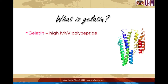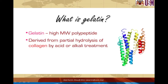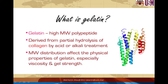Gelatin is actually a protein — a polymer of amino acids joined together by peptide bonds. It is a mixture of high molecular weight peptides produced by partial hydrolysis of a bigger and more complex protein, collagen, using acid or alkaline treatment. The chemical composition of gelatin is closely similar to that of its parent collagen. Gelatin molecules are quite large, with molecular weight ranging from a few thousand up to several hundred thousand daltons. This molecular weight distribution has a great impact on physical properties, particularly viscosity and gel strength.